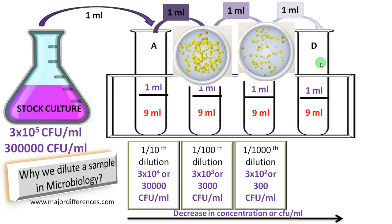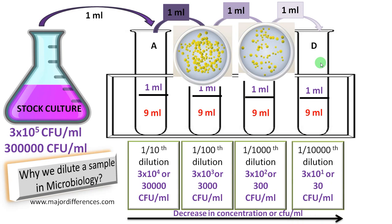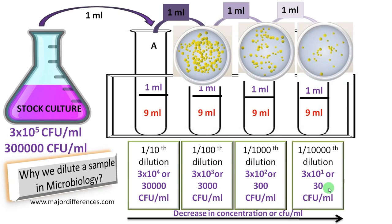Mix well, then from test tube C we transfer 1 ml to test tube D containing 9 ml of diluent or medium. We have now further diluted 10 times, so from the stock solution we have diluted 10,000 times total. The colony forming units per ml becomes 30 — an easily countable number.